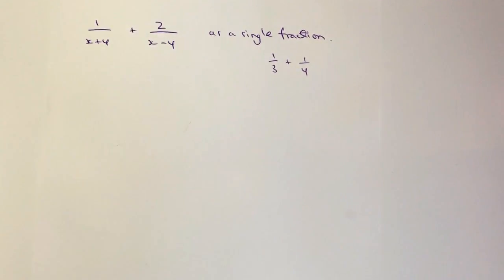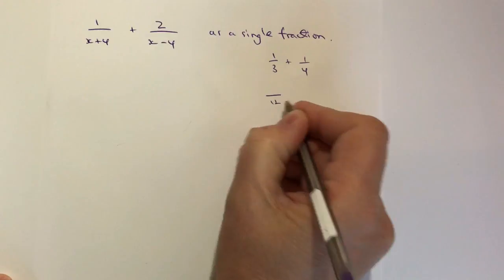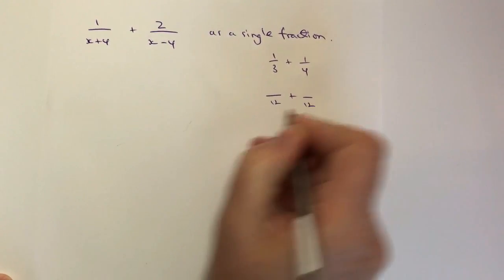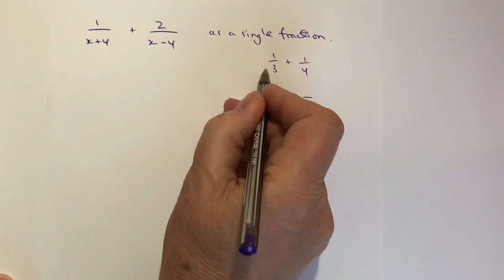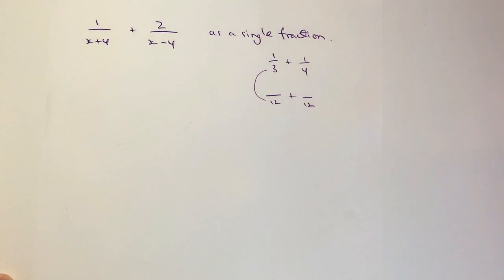Well what we actually do is look at that and we say I'm going to make both the denominators 12 and then what do I multiply that 3 by to get to 12?